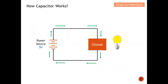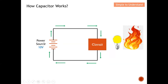Let me further explain how a capacitor actually works. In this diagram, we have a power source generating 5 volts, which produces a current that powers a circuit — let's say a simple LED. The current from the power source powers up the circuit and the LED lights up. This is a basic circuit without a capacitor. The power source generates 5 volts, the current powers the circuit, and the LED lights up normally.